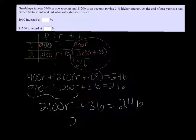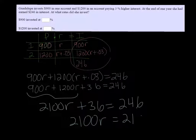Subtract the 36 over on both sides, and let's see, that's going to be 210, right? All right, so 210 divided by 2,100 means that R is 0.01.